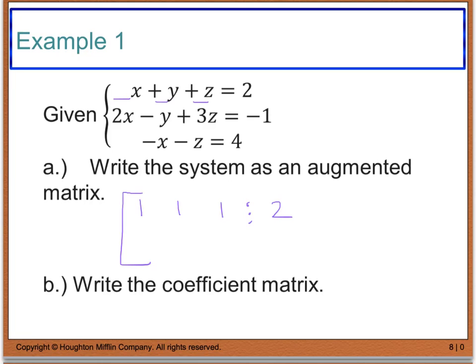For the second equation, I have a 2 in front of x, a negative 1 in front of y, and a 3 in front of z. I put my dots and my constant term of negative 1. For the third equation, I have negative 1 in front of x, no y terms (or 0y), and negative 1 in front of z. I include dots to separate and place my constant of 4, then close the matrix.